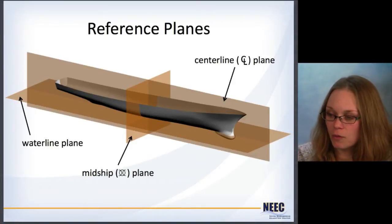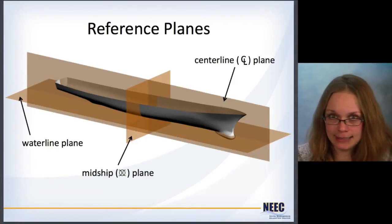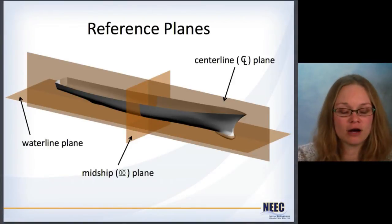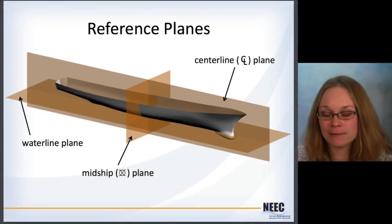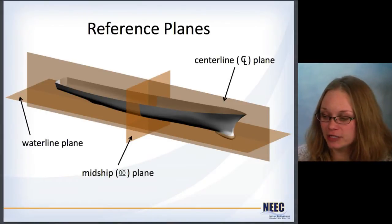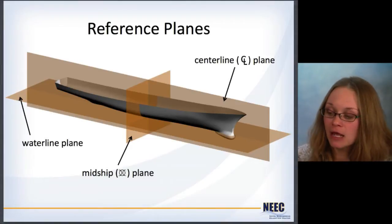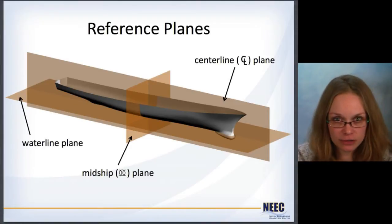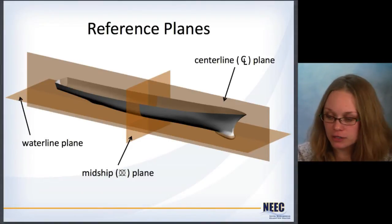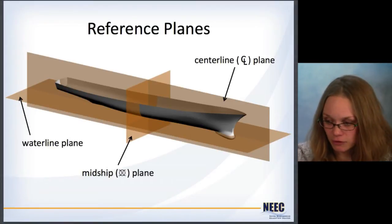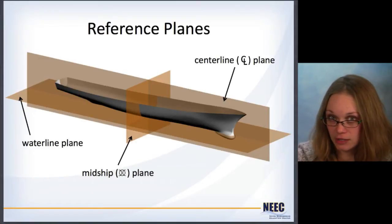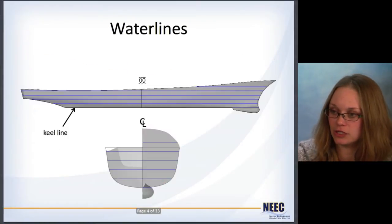There's a big vertical plane that goes down the center line of the ship — very creatively called the center line plane. There's a horizontal plane called the water line plane, and a transverse plane called the midship plane. You'll notice this symbol here with the circle with the two arcs bisecting it — that's the symbol for the midship, the middle of the ship. So if you see that symbol, that's all it means: it's just put at the center of the ship.